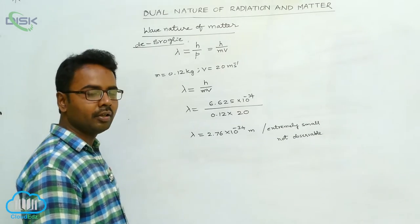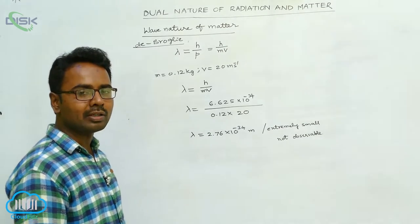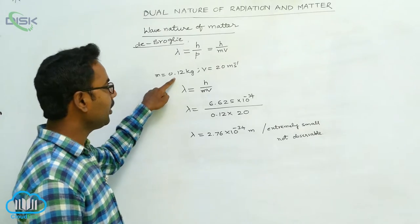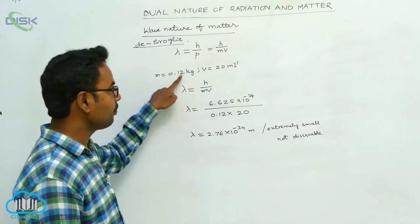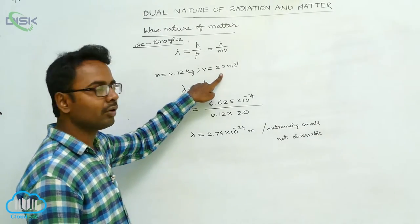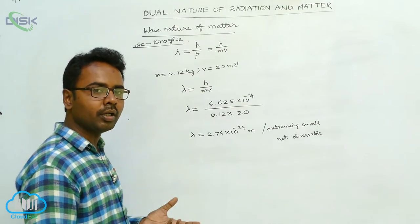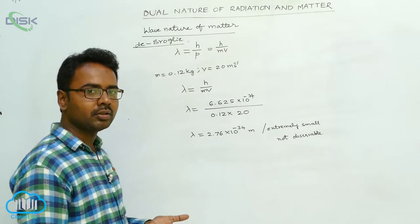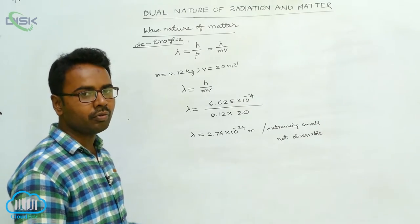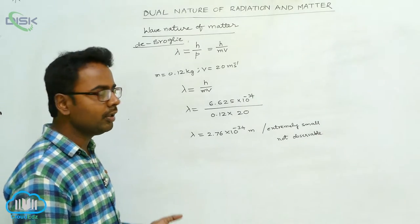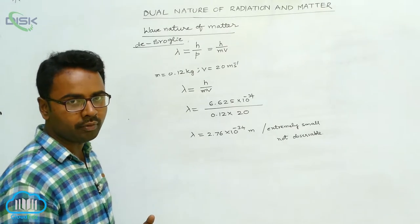We are going to calculate the wavelength of the matter wave associated with a ball having mass 0.12 kg moving with a velocity of 20 meters per second. According to De Broglie, every moving particle is associated with a wave called a matter wave. For the matter wave, wavelength lambda is equal to h by p, or h by mv.